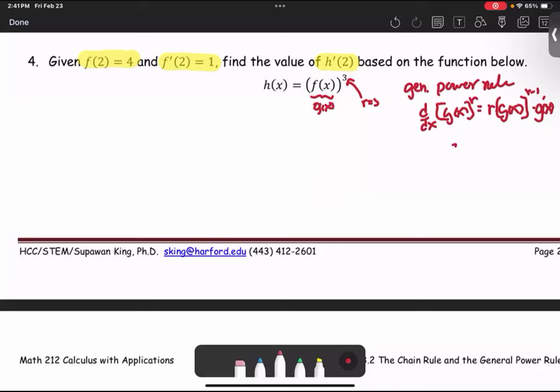Therefore, since g(x) is f(x), g prime is going to be f'(x). Now back to the main problem. Our goal is to find h'(2). h'(2) is h'(x) computed when x equals 2. To find h', we use the general power rule.